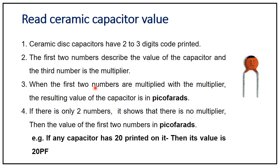When the first two digits are multiplied by the multiplier, the resulting value of the capacitor is in picofarads. If there are only two digits, there is no multiplier, and those two digits directly represent the value in picofarads.